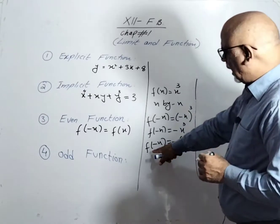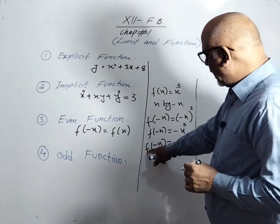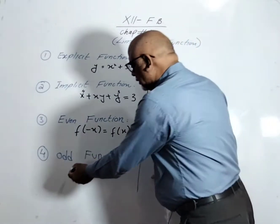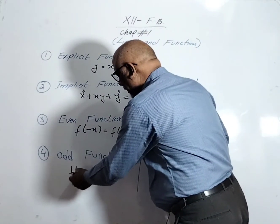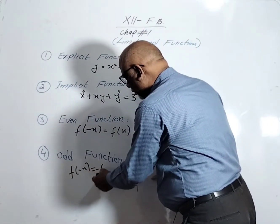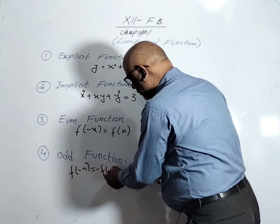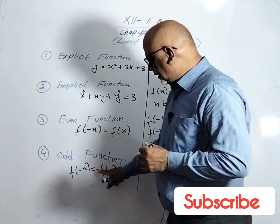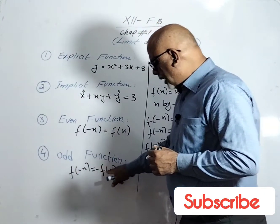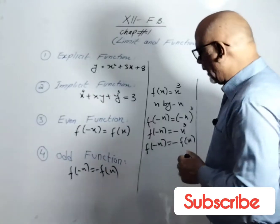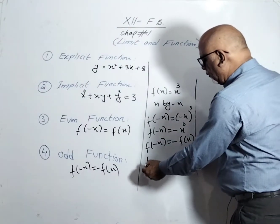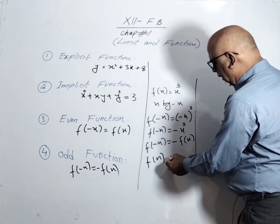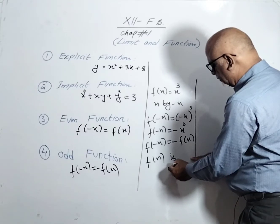Therefore f(-x) = -x³ = -f(x). Since f(-x) = -f(x), that type of function is called an odd function. So f(x) = x³ is an odd function.